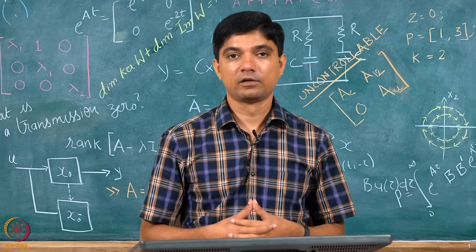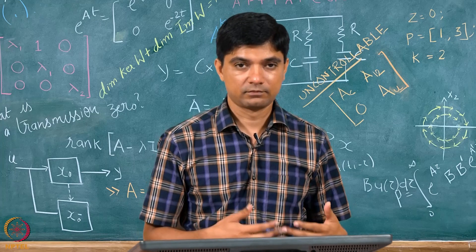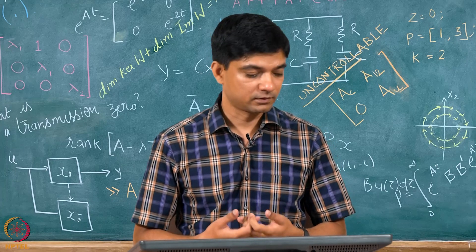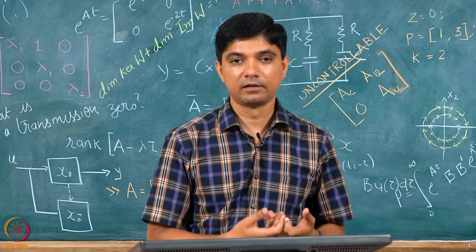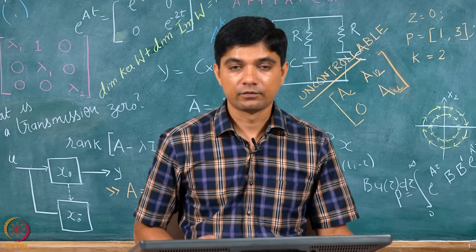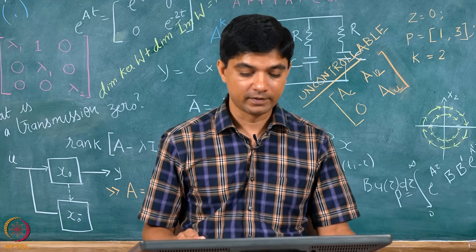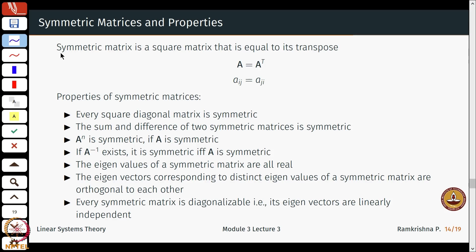Before we deal with rectangular matrices, let us talk a bit about another special matrix. We introduced them earlier as symmetric matrices — matrices which are equal to their transpose, that is A equals A transpose. This comes with some nice properties. Something easy to check is that every square diagonal matrix is symmetric.